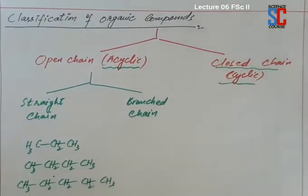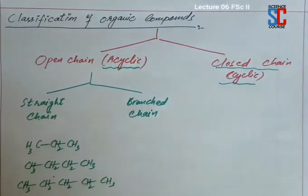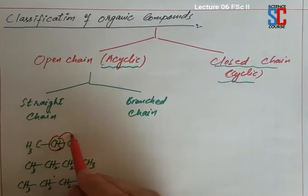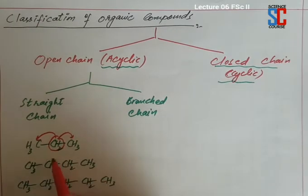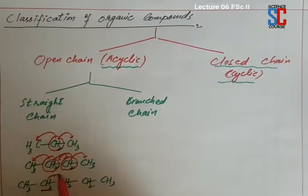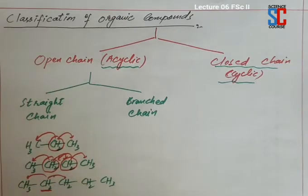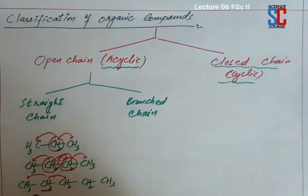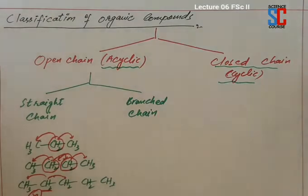You can see these are straight chain compounds in which one carbon atom is directly attached with maximum two carbon atoms. This carbon atom is directly attached with two carbon atoms, this one also with two, and this one also with two carbon atoms. There is no atom which is directly attached with more than two carbon atoms. So they are called straight chain compounds and before their name we add the prefix 'normal'.